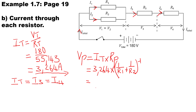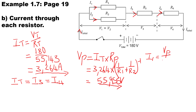Working out the volt drop across the parallel branch gives us 55.955 volts. Now that we have the volt drop across the parallel branch, we can go ahead and calculate I1.